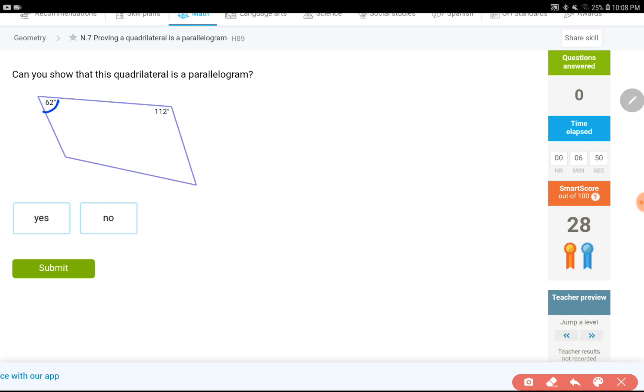In a parallelogram, adjacent angles are supplementary. So, they must be, the sum of these two angles must be 180 degrees if this figure is a parallelogram. So, let's just check that one out. 112 and 62 degrees. When I add these together, I get 174 degrees and it is not equal to 180 degrees. So, this would be a no.